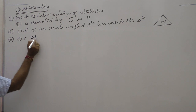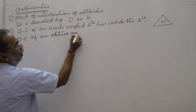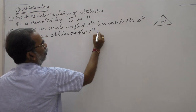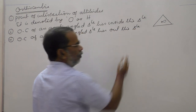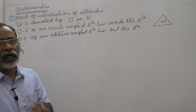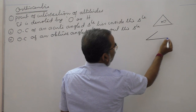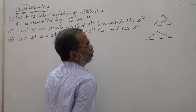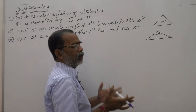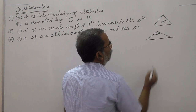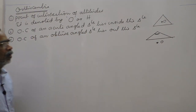The orthocenter of an obtuse-angled triangle lies outside the triangle. An obtuse-angled triangle has one angle more than 90 degrees. If you draw three altitudes (perpendicular lines to the opposite sides), they intersect outside the triangle, so the orthocenter lies outside.